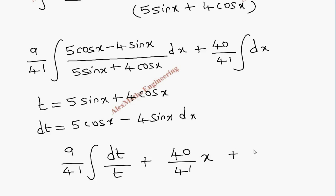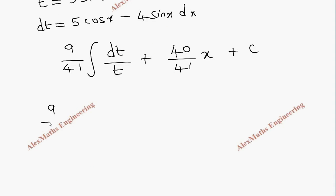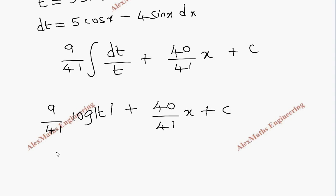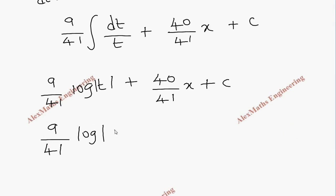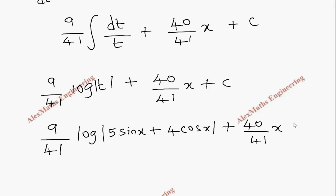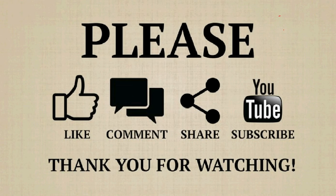So the final answer is: (9/41)·log|t| + (40/41)·x + C. Substituting back t = 5 sinx + 4 cosx, the answer is (9/41)·log|5 sinx + 4 cosx| + (40/41)·x + C.